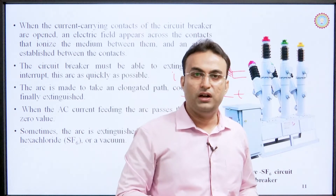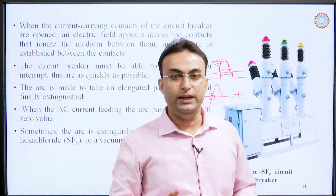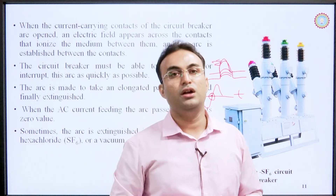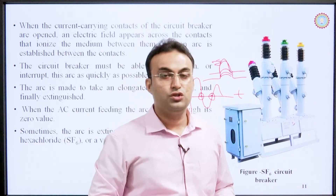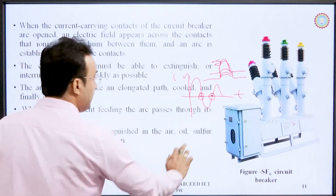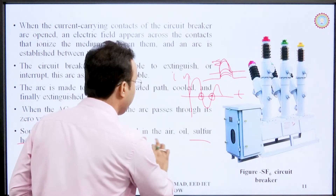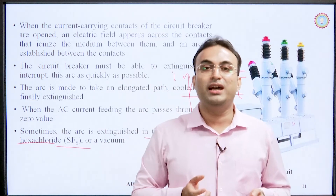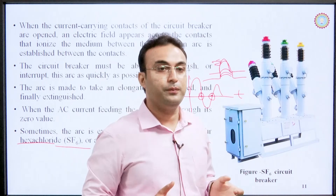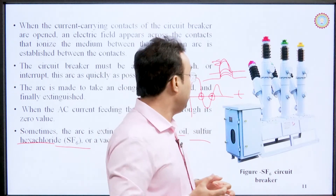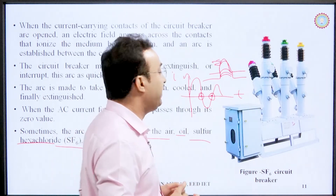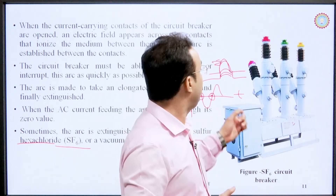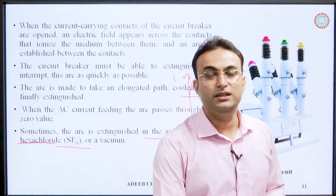Different technologies are used for arc quenching. One leading technology is vacuum circuit breakers. Extinguishing mediums such as SF6 (sulfur hexafluoride), air, and oil are also used. The medium between the contacts is exposed to these materials to quench the arc as quickly as possible. In the next lecture we will discuss the two other main components of power system protection. Thank you so much.